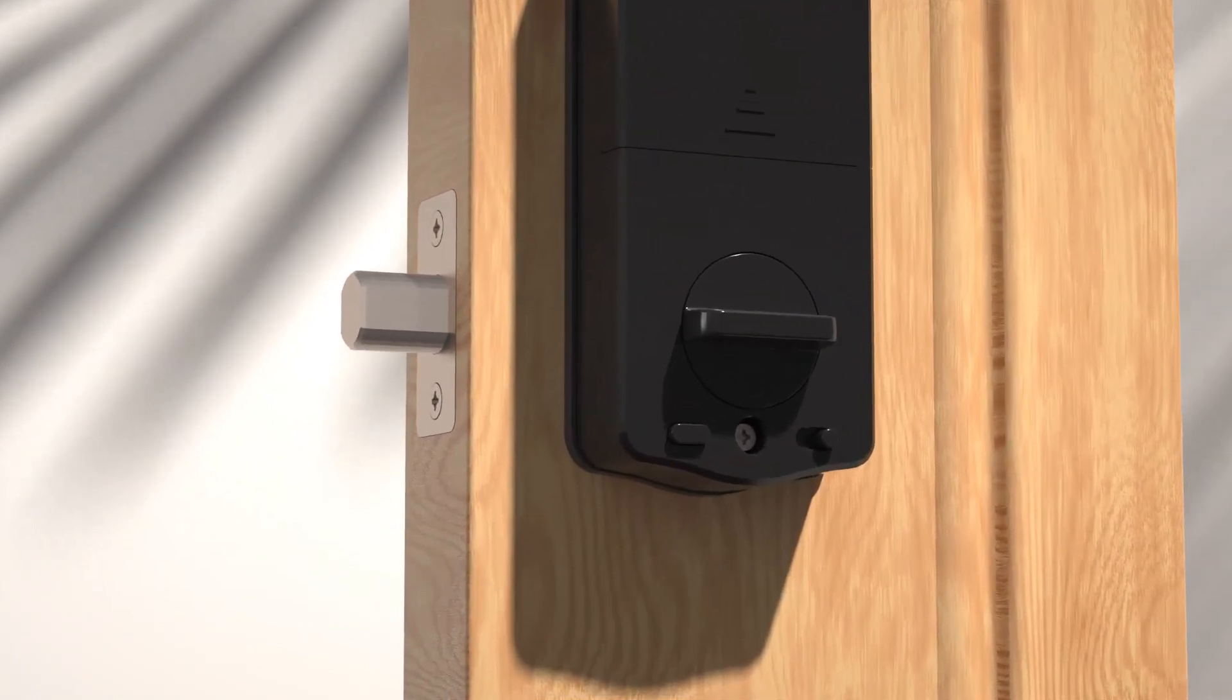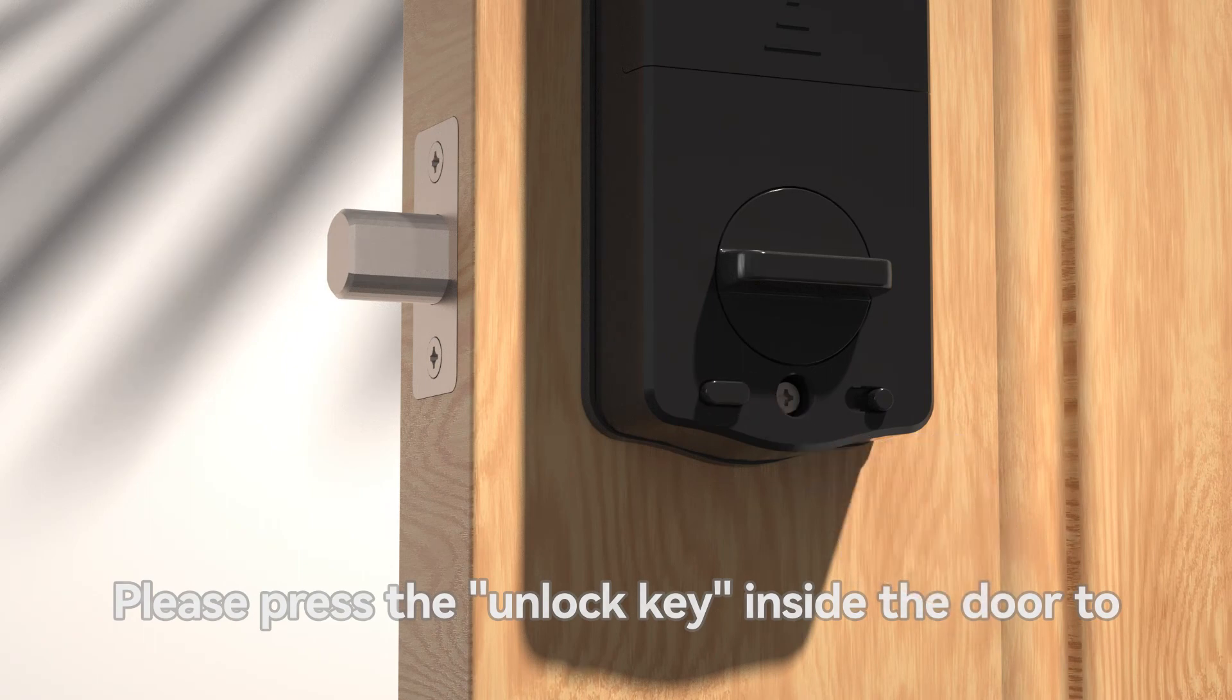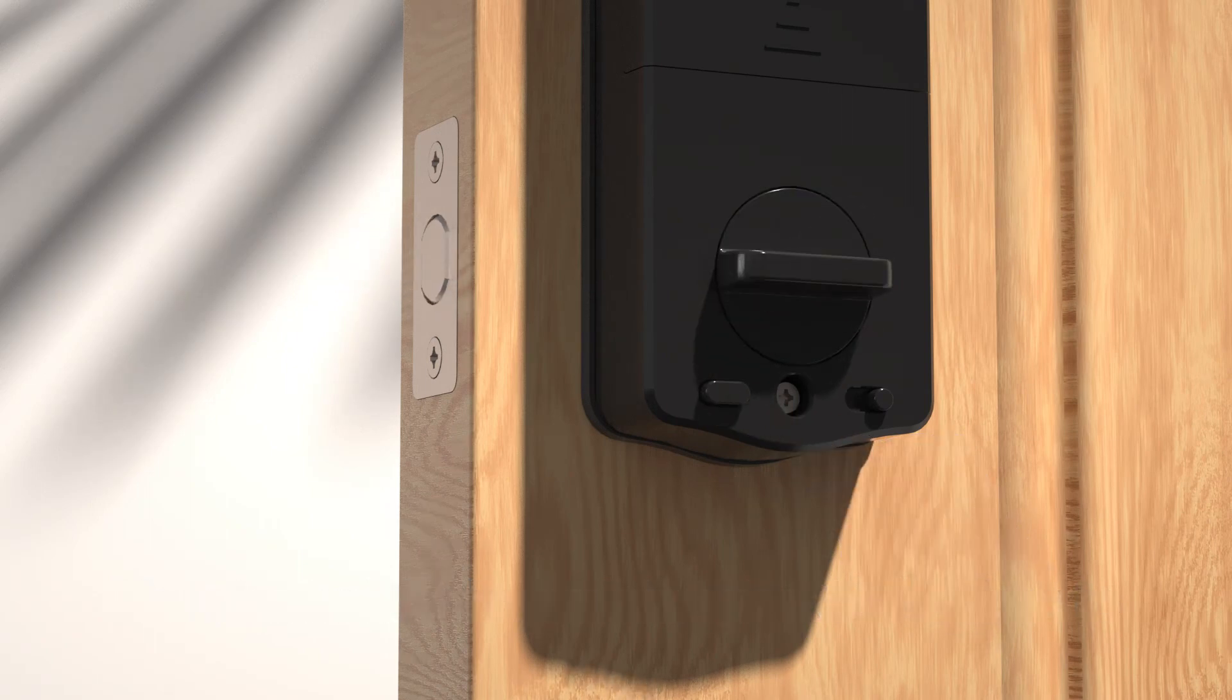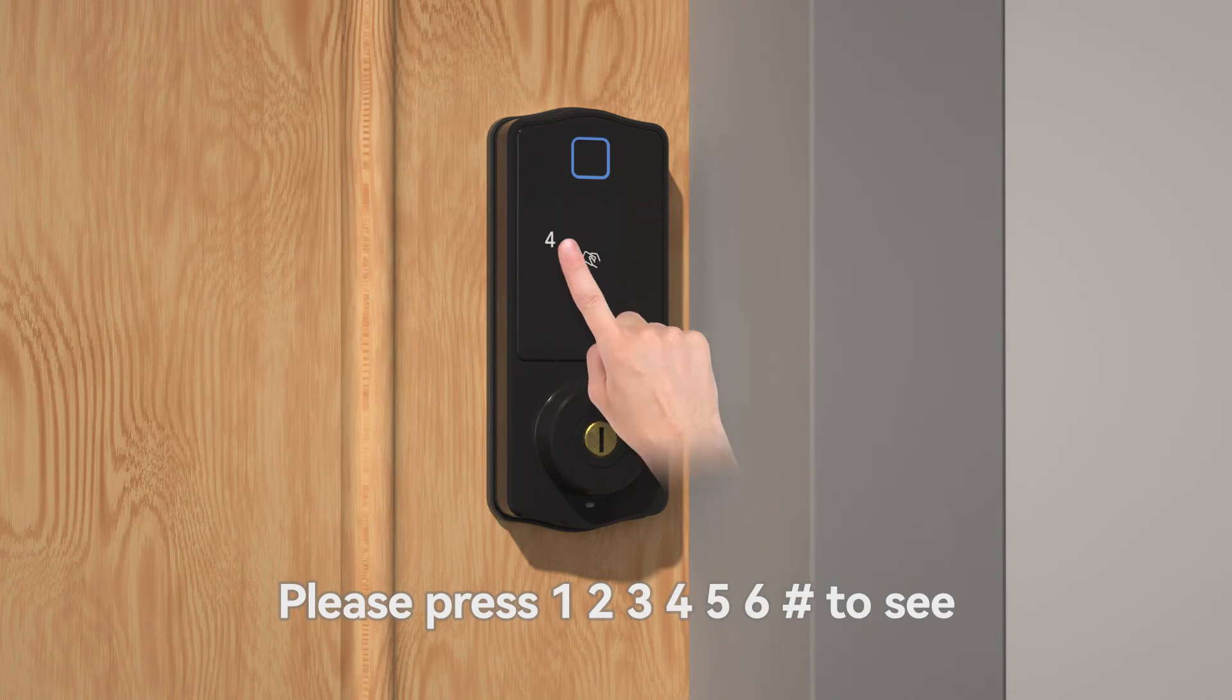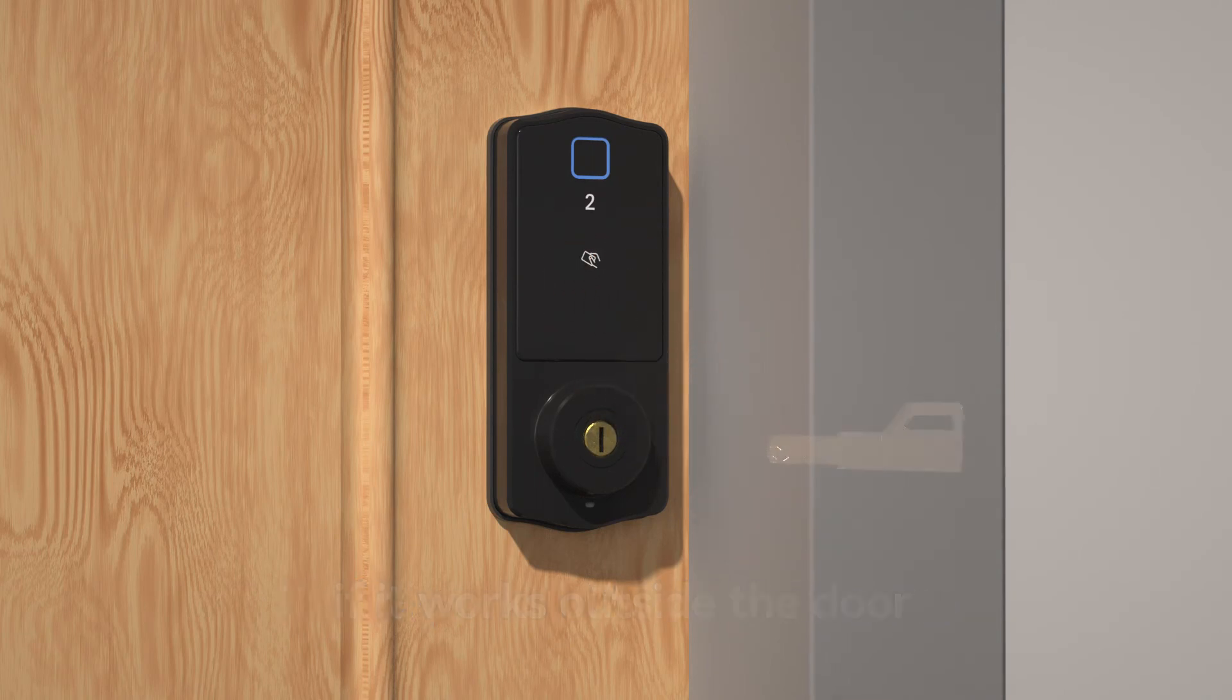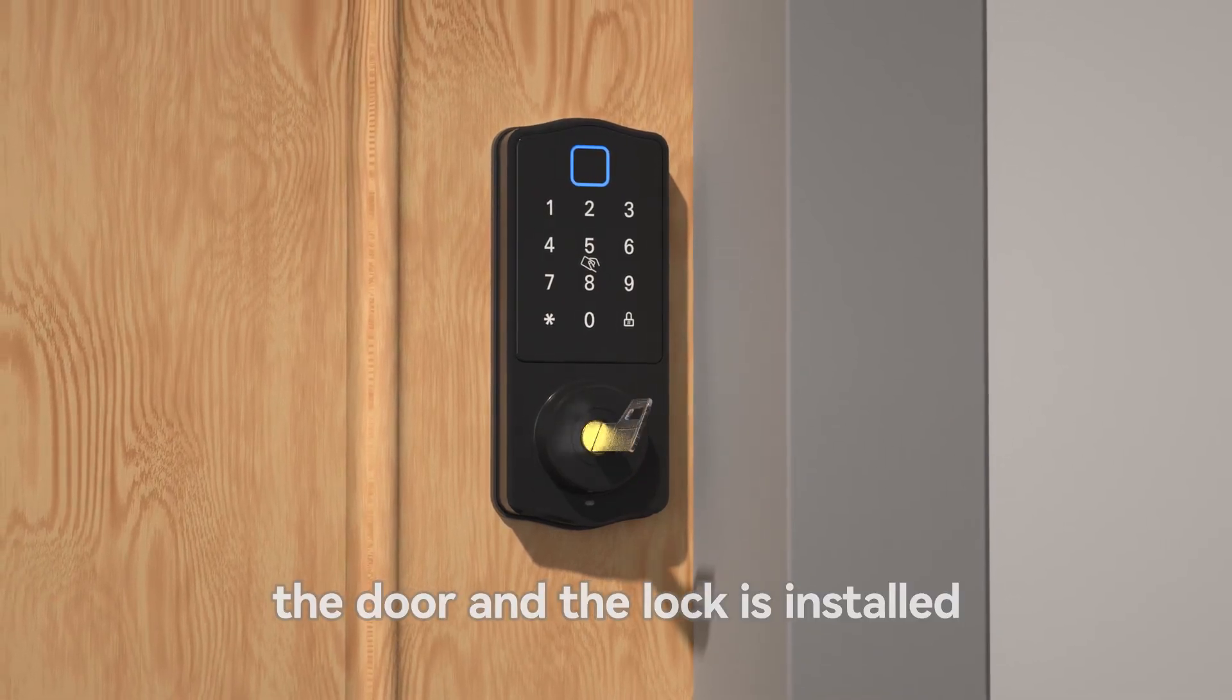After installation, please press the unlock key inside the door to test whether you can open the door. Please press 123456 pound to see if it works outside the door. Insert the key to open the door and the lock is installed.